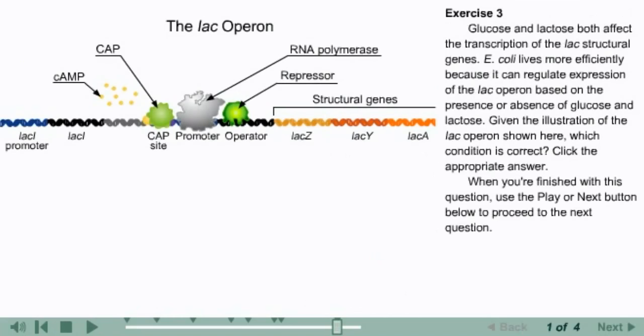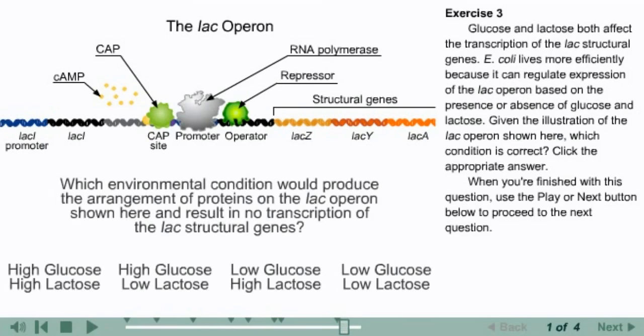Glucose and lactose both affect the transcription of the lac structural genes. E. coli lives more efficiently because it can regulate expression of the lac operon based on the presence or absence of glucose and lactose. Given the illustration of the lac operon shown here, which condition is correct? Click the appropriate answer.